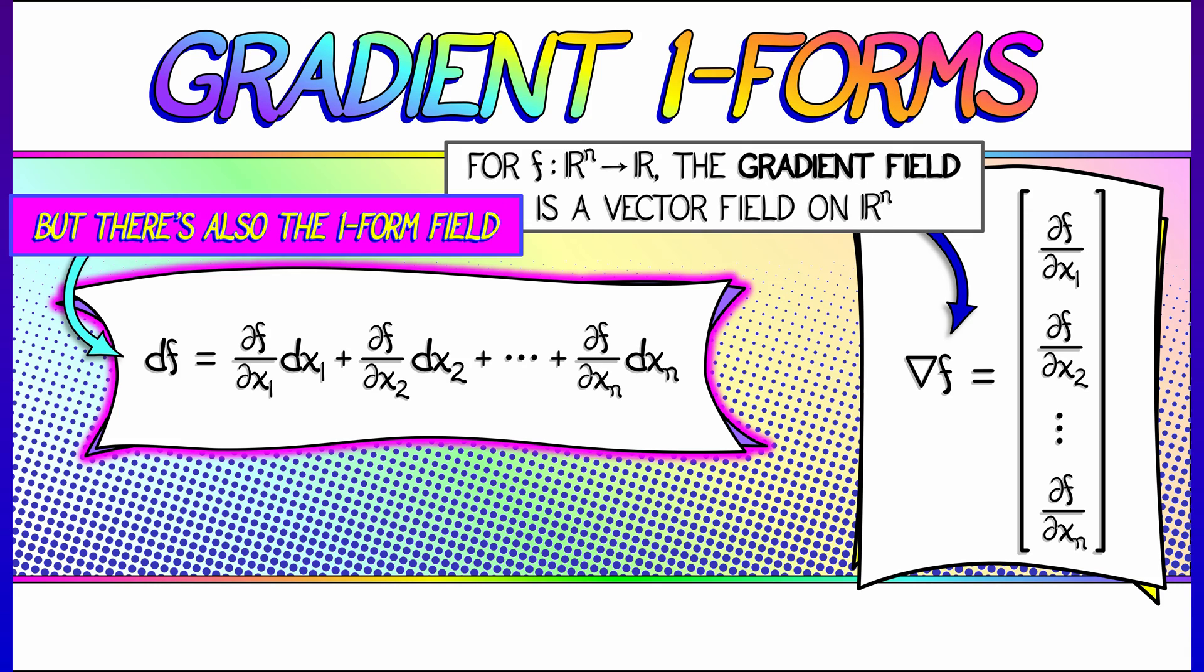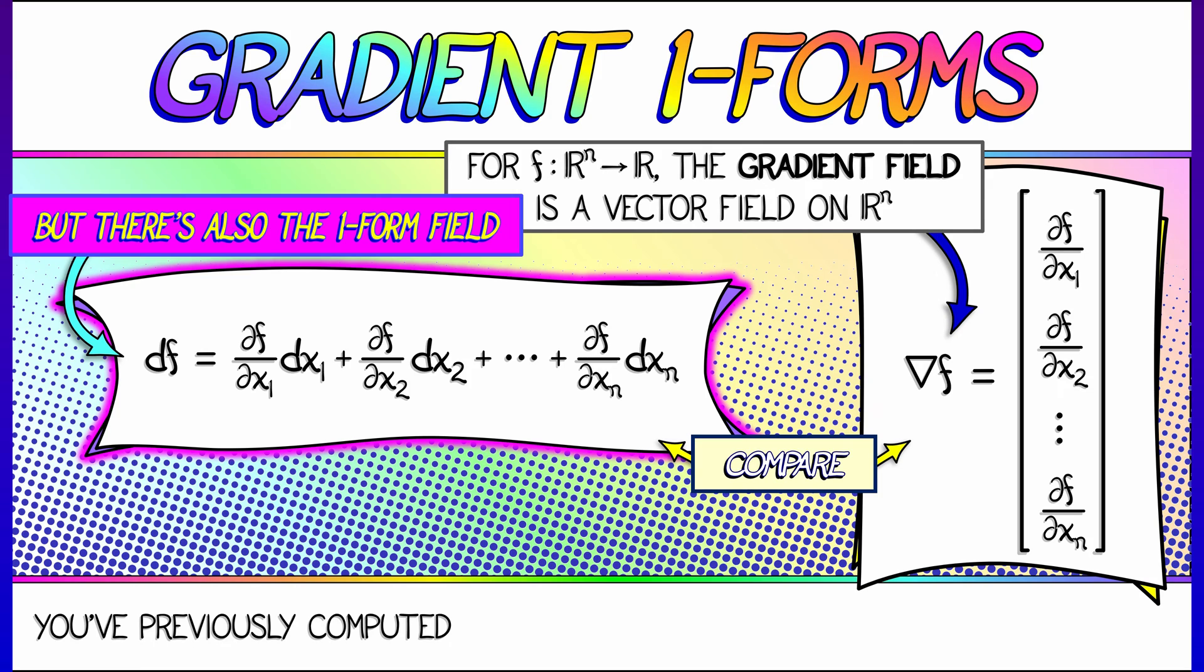Now, if I think about this, on the one hand I've got a vector field on R^n. On the other, I have a one-form field on R^n. They have the same exact components, but are interpreted differently. Now, we've computed one-form fields before. df makes sense via implicit differentiation. It's just now that we have a different language for it.